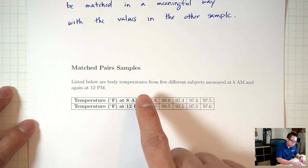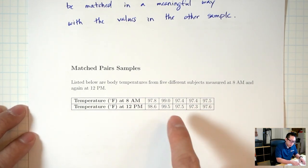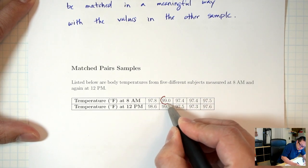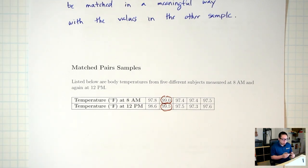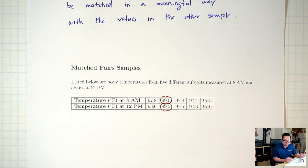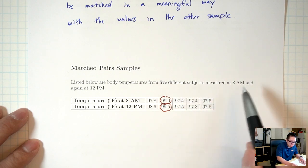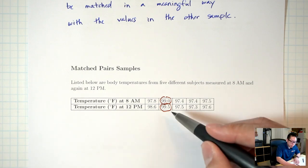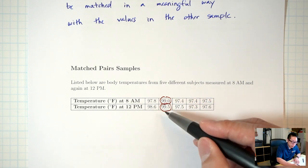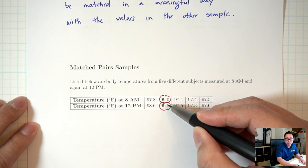This is different from the next example. Here, listed below are body temperatures from five different subjects measured at 8am and again at 12pm. The first row is temperatures at 8am, the second row is temperatures at 12pm. Looking at 99.0 and 99.5 — based on the description, is there any reason why this 99.5 needs to go with this 99.0? Yes, because these are body temperatures from five different subjects measured at 8am and again at 12pm. So the 99.0 and 99.5 are actually measurements on the same person — one at 8am and again at 12pm. Because there are measurements on the same person, these two measurements should go together — they should be matched.